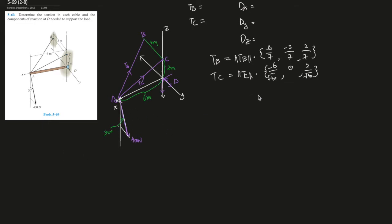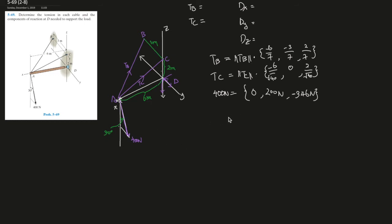For the 400-newton force, there are x, y, and z components. Nothing is moving in the x direction, so that's zero - which is really nice when two components are zero, it's a good sign. The y-component is 400 times sine of 30, which is 200 newtons. The z-component is 400 times cosine of 30, which gives you 346 newtons, and this is going in the negative direction downward.